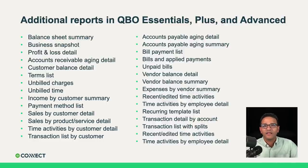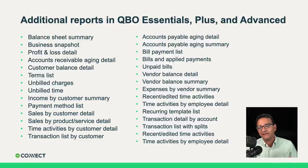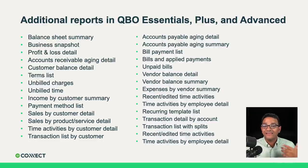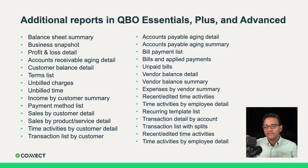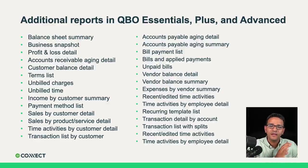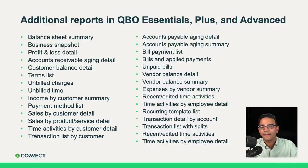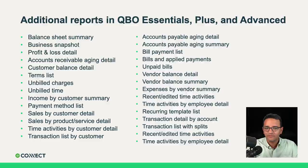QuickBooks Online Simple Start and all versions contain all the basic financial reports you need. There are about 30 more reports in QuickBooks Online Essentials compared to Simple Start. When you upgrade from Simple Start to Essentials or higher, you get reports like a balance sheet summary, vendor balance summary, bills and applied payments, and open time activities by employees. All these report types are only available in Essentials, Plus, and Advanced.